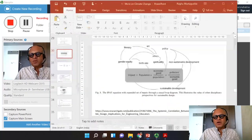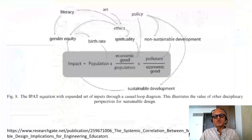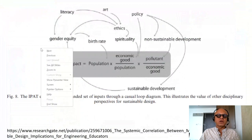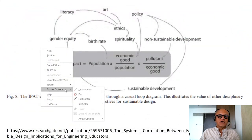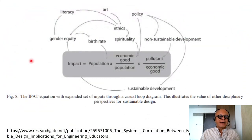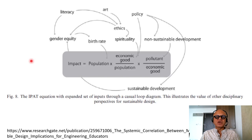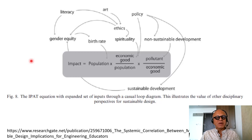A couple of points from Andy's book reemphasize what we already saw. This covers the IPAT equation in terms of energy intensity of GDP and carbon intensity of energy, including population, which evolved in the 1960s or 70s as the IPAT equation — Impact, Population, Affluence, and Technology.